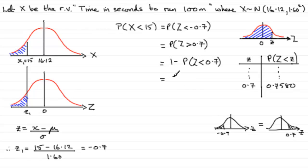So, when we just work this out, we've got 1 minus 0.7580. And what does that give us? It gives us 0.242. Okay? So, there we go. That's how I would work out, anyway, the probability that X is less than 15.